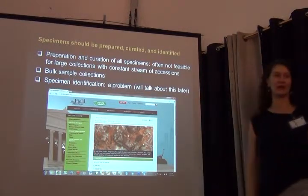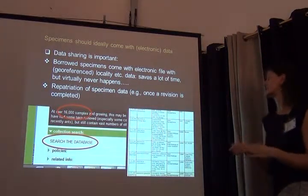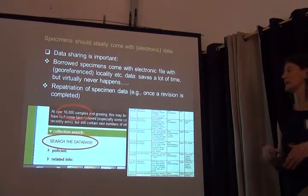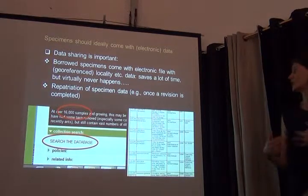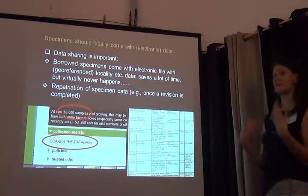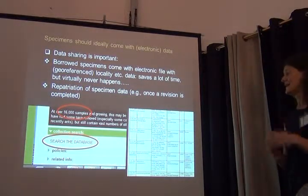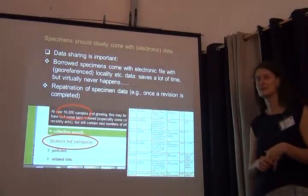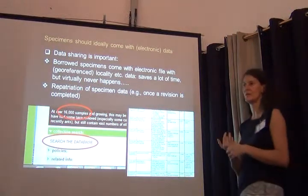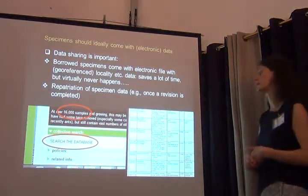Specimen identification is obviously a problem, but I'll talk about that later. Data sharing is important. In some cases, when we borrow specimens from other institutions, they already come with an electronic file that has georeferenced localities and so forth. That's a great thing because it saves a lot of time — we would never recapture this data otherwise. This virtually never happens, but one exception is INBIO, a big collection in Costa Rica with a really nice database that can actually export all the data and give it to you.